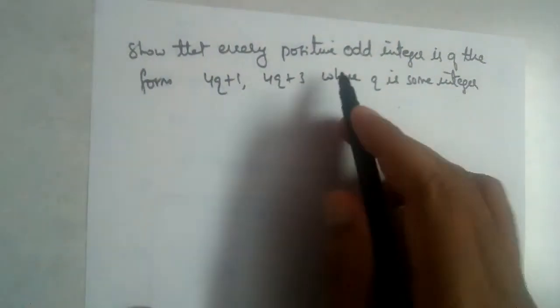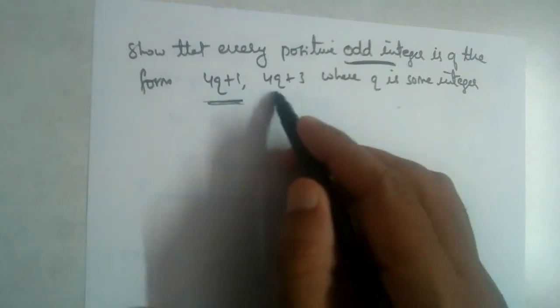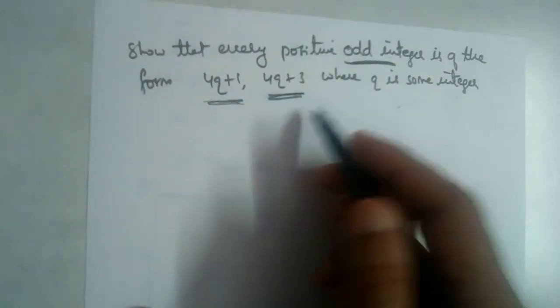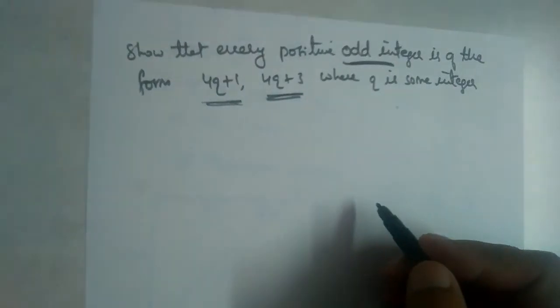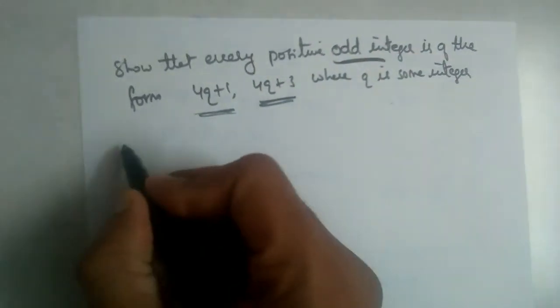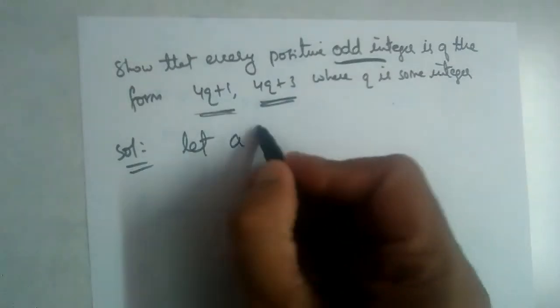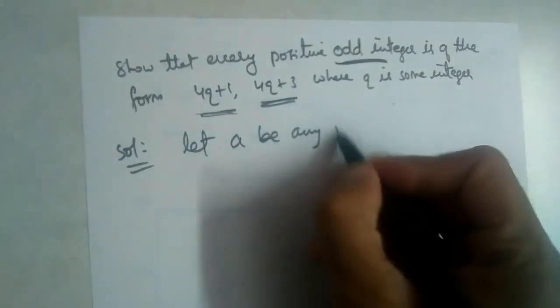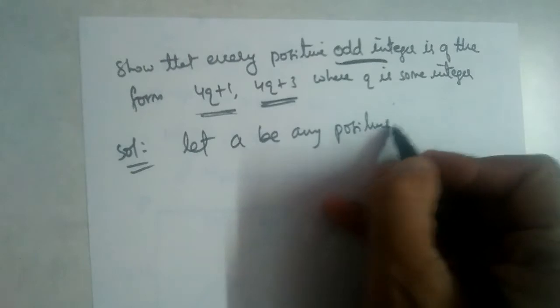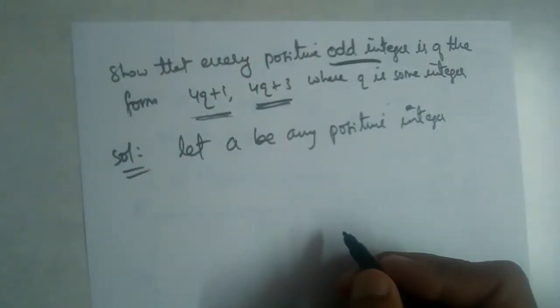Show that every positive odd integer is of the form 4q plus 1 or 4q plus 3, where q is some integer. We should use Euclid's division algorithm to prove this. In such problems, our first step is to let a be any positive integer.